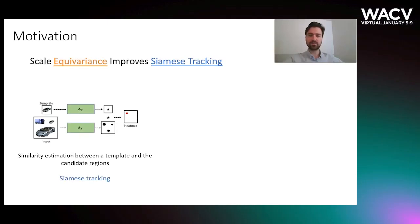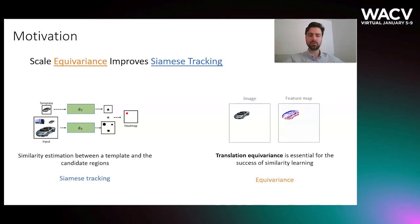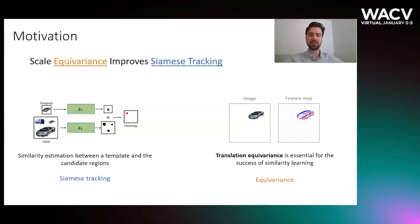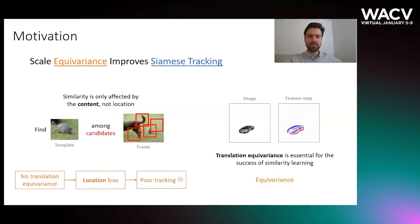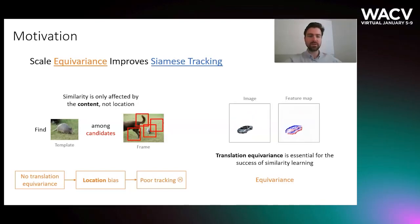Siamese tracking turns tracking into a similarity estimation between a template and the candidate regions. When the similarity function is powerful, the tracking is robust and accurate. Another cornerstone is equivariance, and in particular translation equivariance — that is to say, the translation of an input image results in a corresponding translation of produced feature maps. Translation equivariance is an essential ingredient for Siamese tracking, because it allows sharing the same similarity function across all images. In other words, similarity is only affected by the contents of the image, not location.